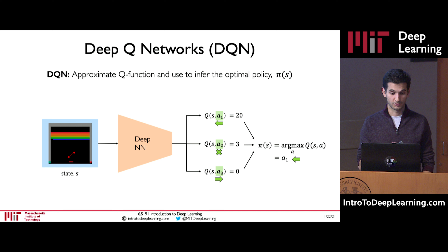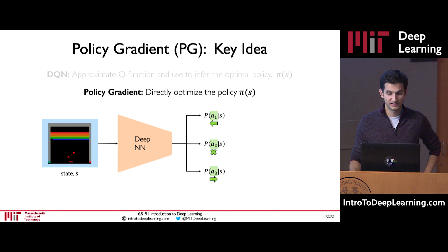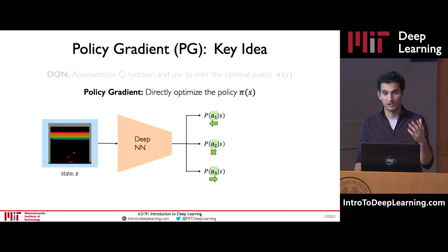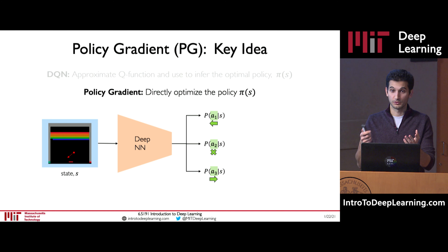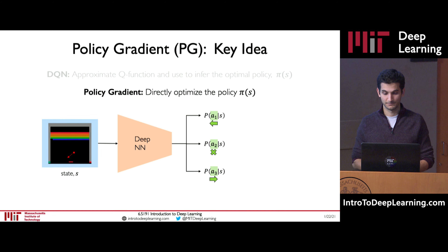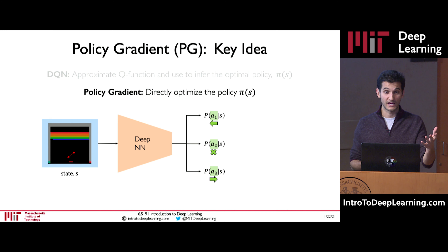Let's revisit Q neural networks: they take as input a state and output the expected maximum reward or return for each action. In policy learning, we're not predicting Q values — we're directly optimizing for pi(s), the policy distribution, which directly governs how the agent should operate when placed in a given state. The outputs represent not an expected reward the agent can achieve in the future, but the probability that a given action is a good action to take in that state. It's a much more direct way of thinking about this problem.